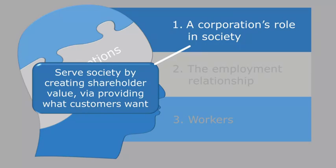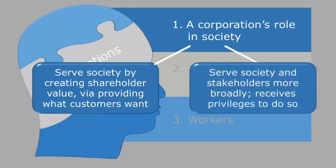There's the shareholder value view, which is that corporations best serve society by creating shareholder value — by providing goods and services that are valuable to customers. On the other hand, there's an alternative view which emphasizes that corporations receive privileges to serve society. For example, owners are shielded from being personally responsible for a company's debts through limited liability, and it's society that is granting those limited liability privileges.